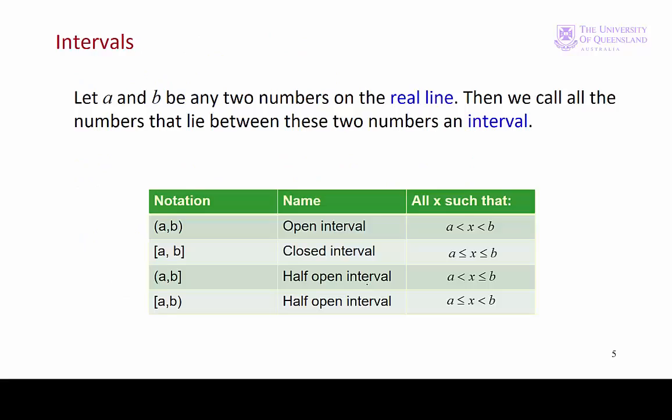Inequalities can be used to describe intervals. We let a and b be any two numbers on the real line then we call the numbers that lie between these two numbers an interval. Open intervals do not include a and b and are represented by round brackets. Closed intervals do include a and b and are represented by square brackets. And of course we can have half open intervals. It's important you become familiar with this notation.